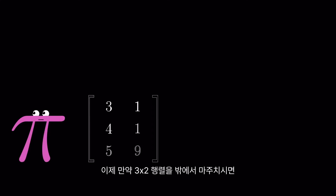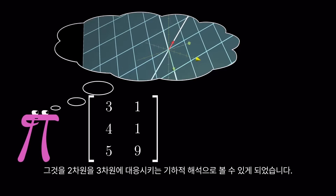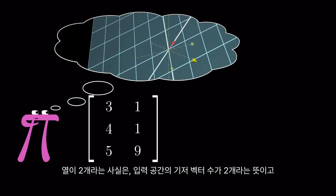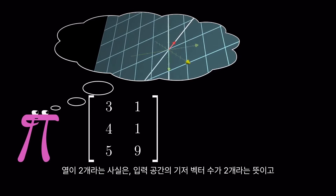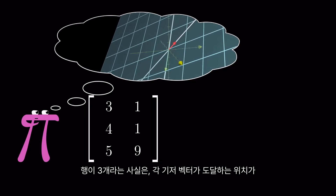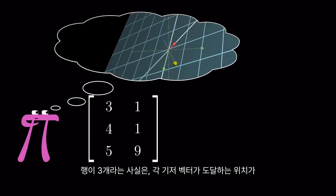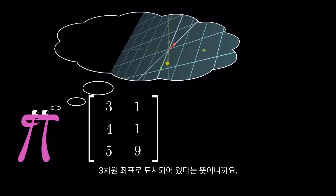So, if you see a 3 by 2 matrix out in the wild, you can know that it has the geometric interpretation of mapping two dimensions to three dimensions, since the two columns indicate that the input space has two basis vectors, and the three rows indicate that the landing spots for each of those basis vectors is described with three separate coordinates.